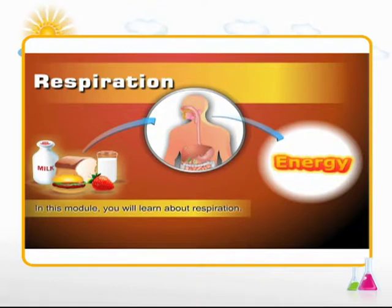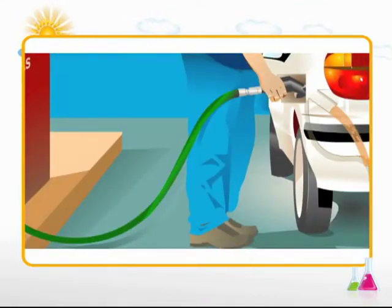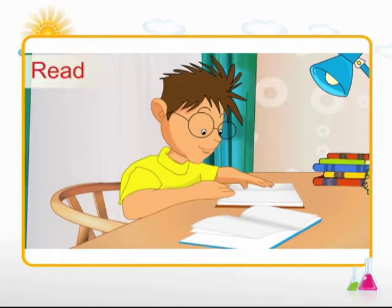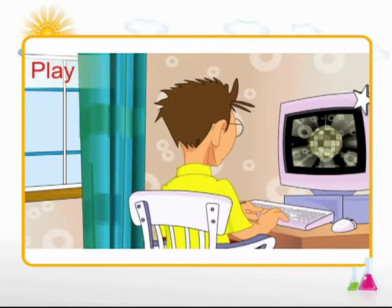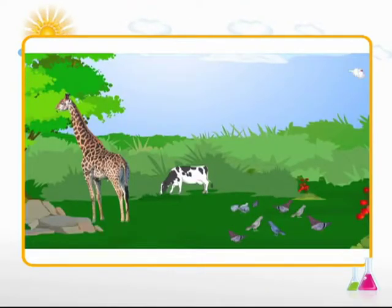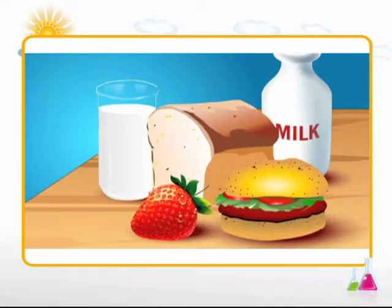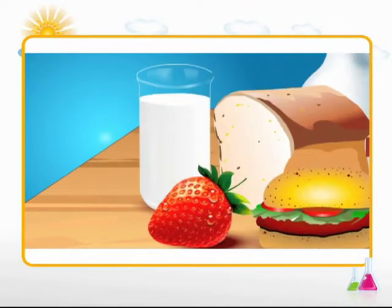In this module, you'll learn about respiration. Just as a motor vehicle needs gas to run, we need energy to perform our daily functions. Energy is required to read, play, eat and even to sleep. Likewise, animals and plants also need energy for living and growing. Can you guess from where do living beings get energy? Living beings get energy from the food they eat. Food has energy stored in the form of chemical energy.